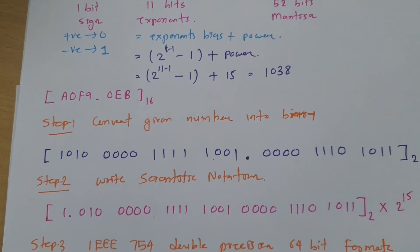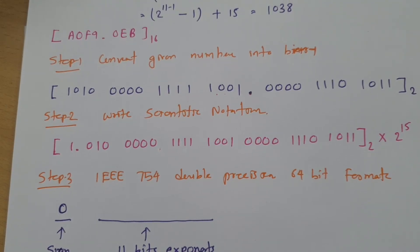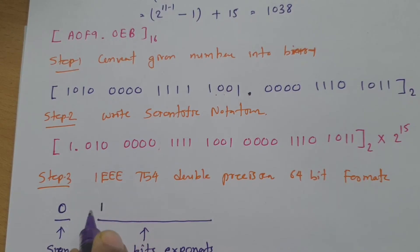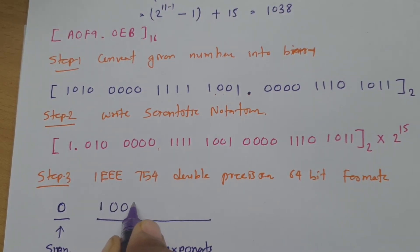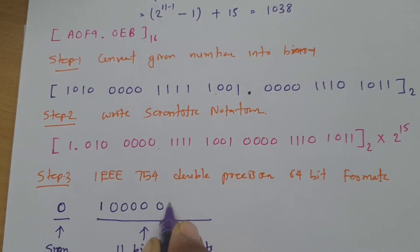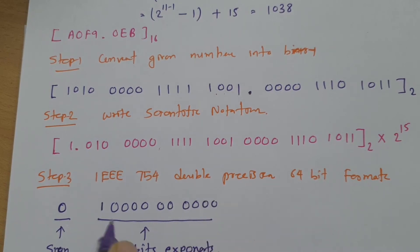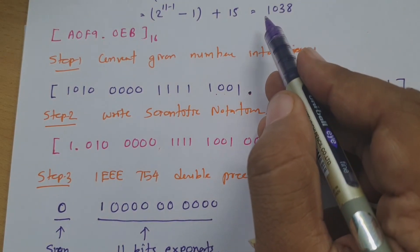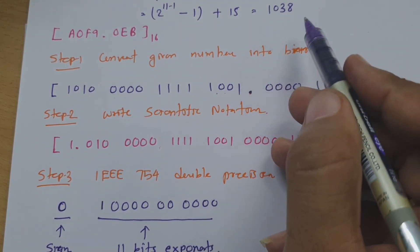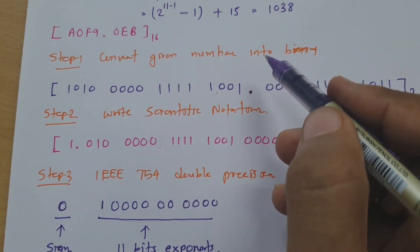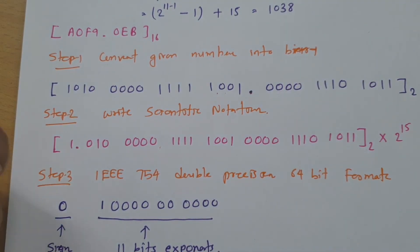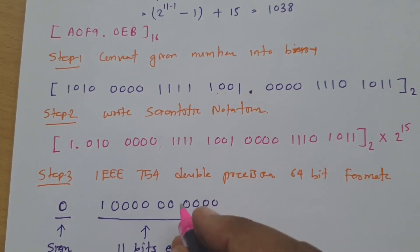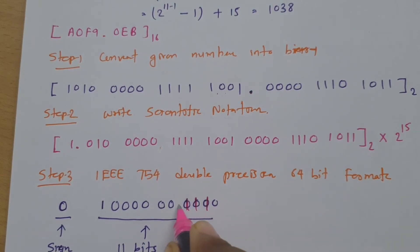The exponent value is 1038. To write 1038 in 11-bit binary: the first bit is 1 representing 1024, and 1038 equals 1024 plus 14. So we write 1 followed by the remaining bits representing 14, which is 1110. Therefore the 11-bit exponent is 1 0000 0 1110, giving us 1038 in binary.